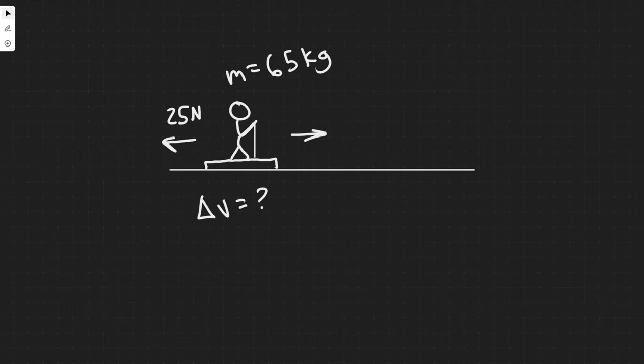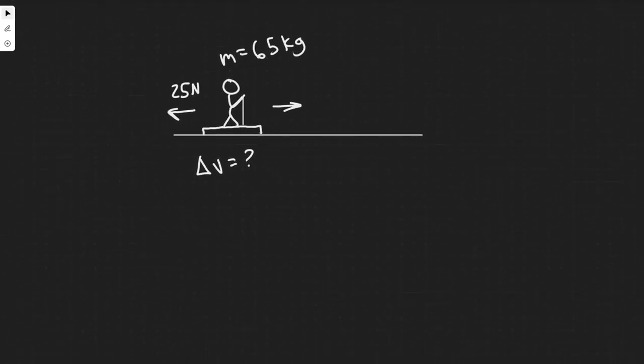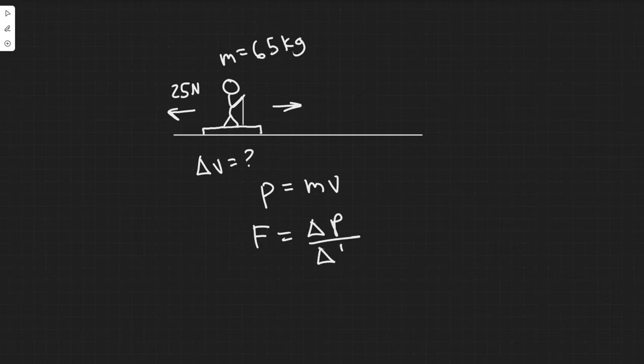Let's go ahead and start solving. The way we're going to use it is by plugging a bunch of formulas together and then using that to solve. The first formula is momentum which is p equals mass times velocity. The other formula is force equals the change in momentum over the change in time.